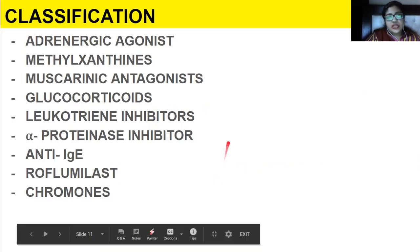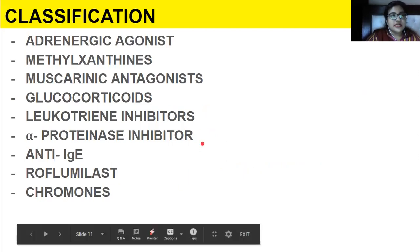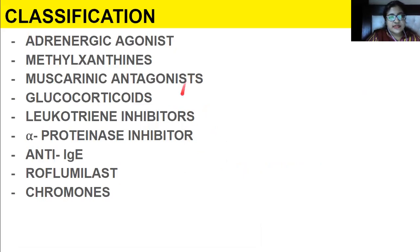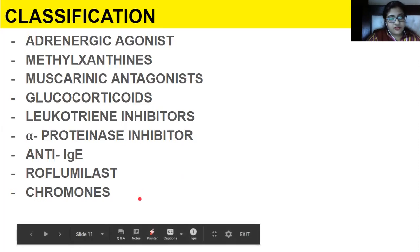The drugs required to treat asthma include: adrenergic agonists, methylxanthines, muscarinic antagonists, glucocorticoids, leukotriene inhibitors, alpha-1 protease inhibitors, anti-immunoglobulin E, and chromones.